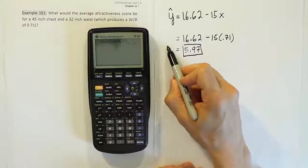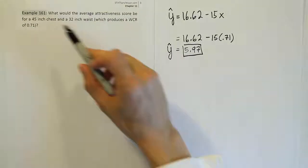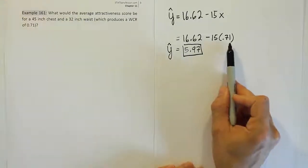Alright, so that's the attractiveness rating on an 8-point scale that's likely to occur if you have a waist-to-chest ratio of 0.71.